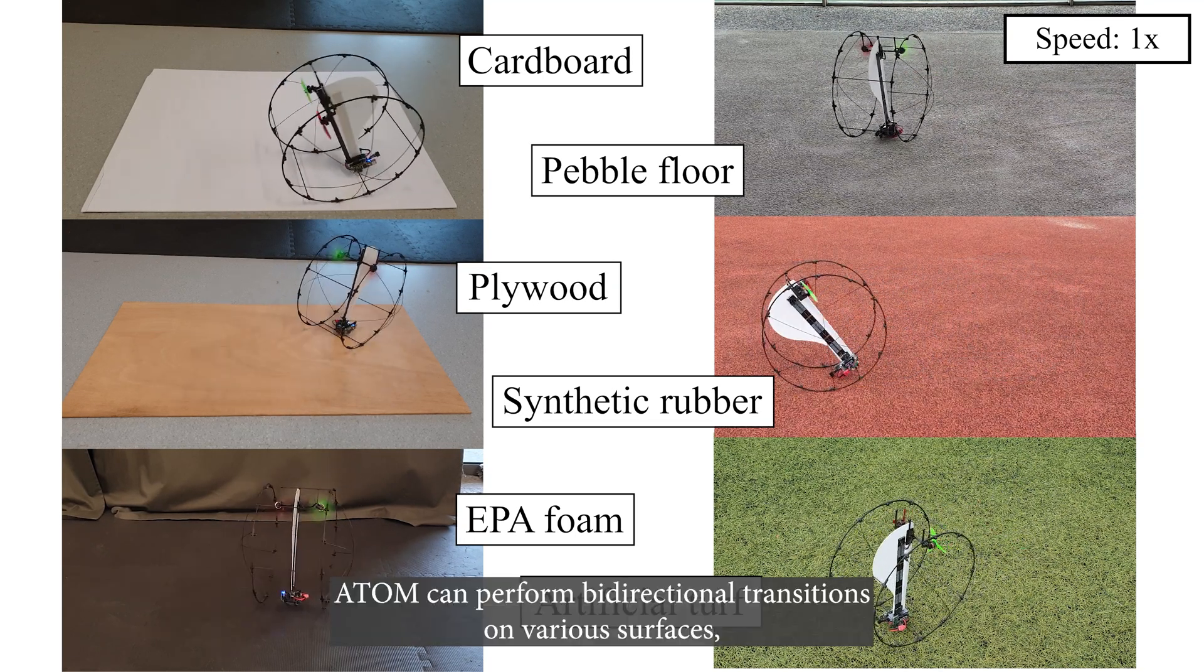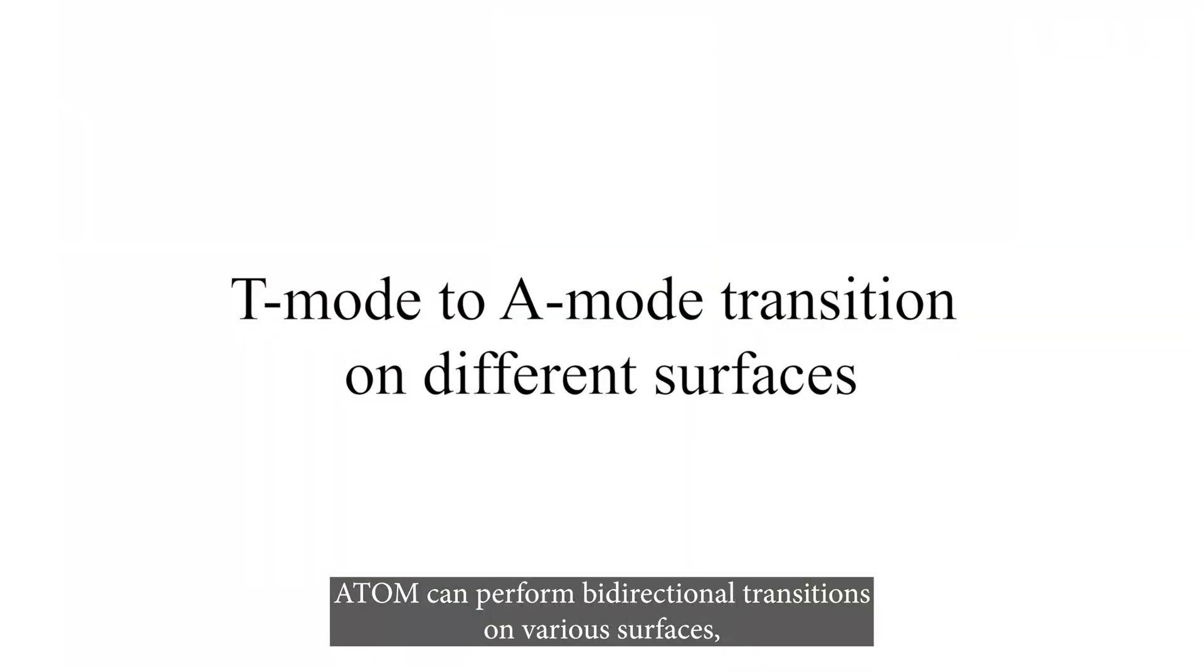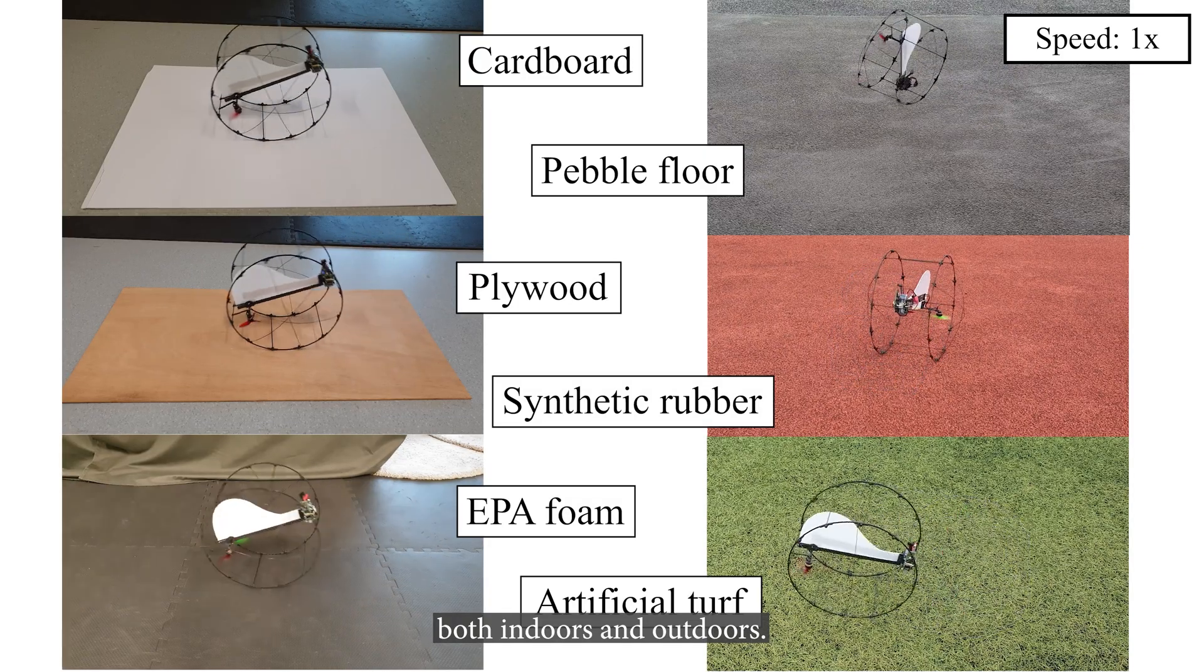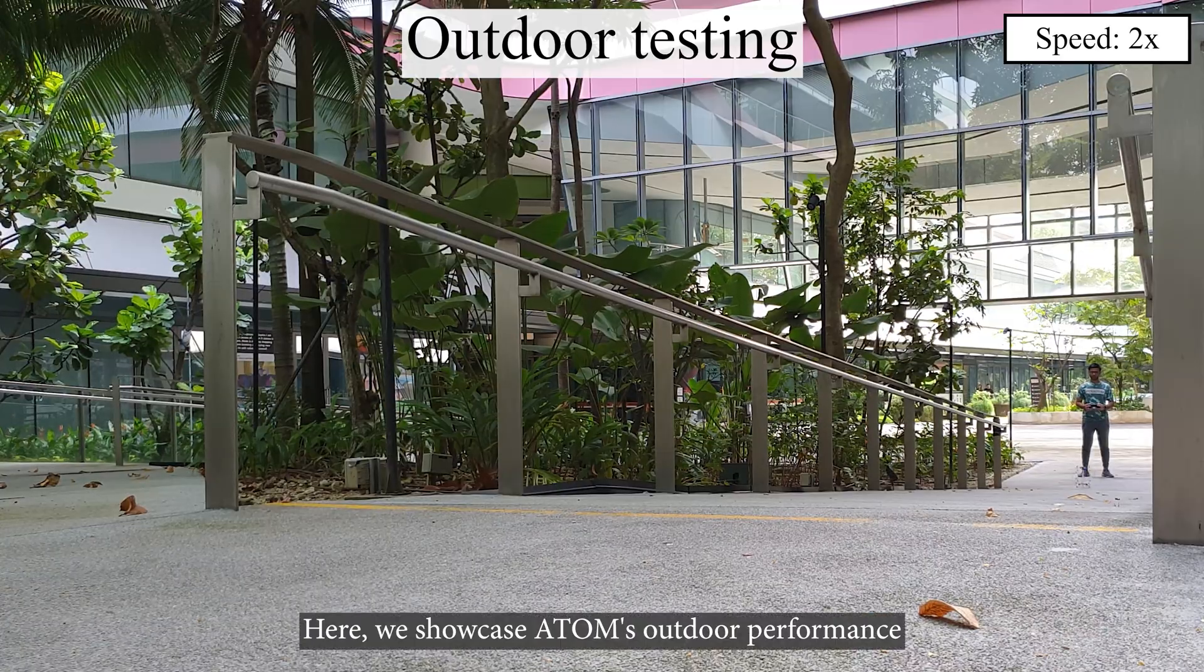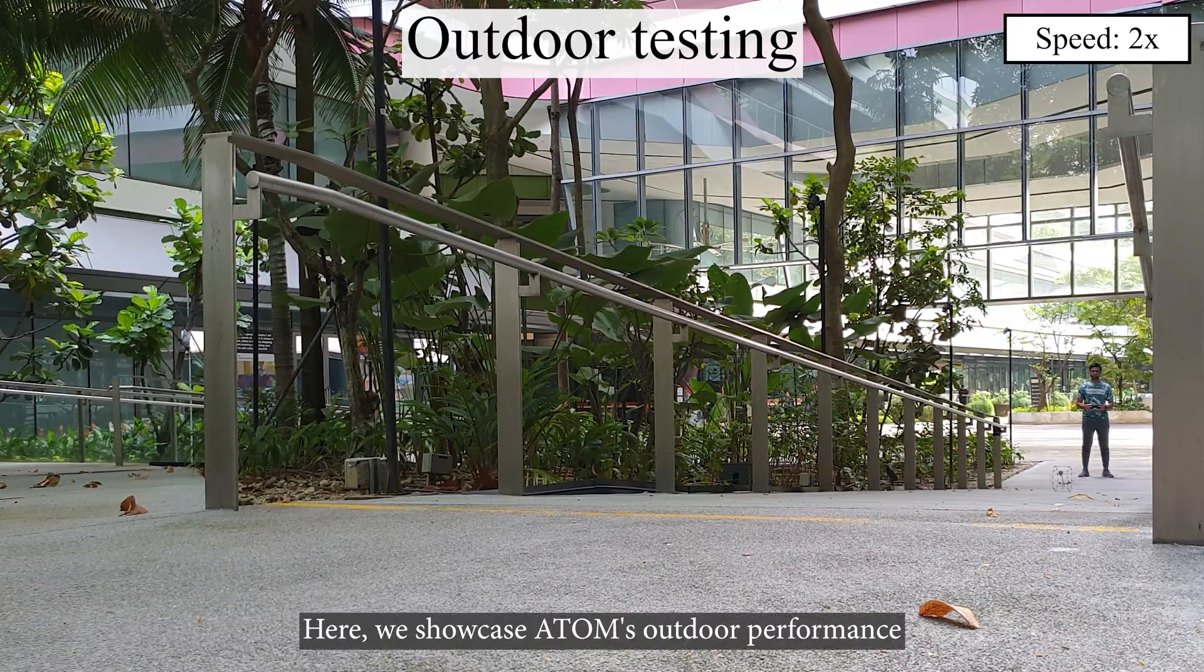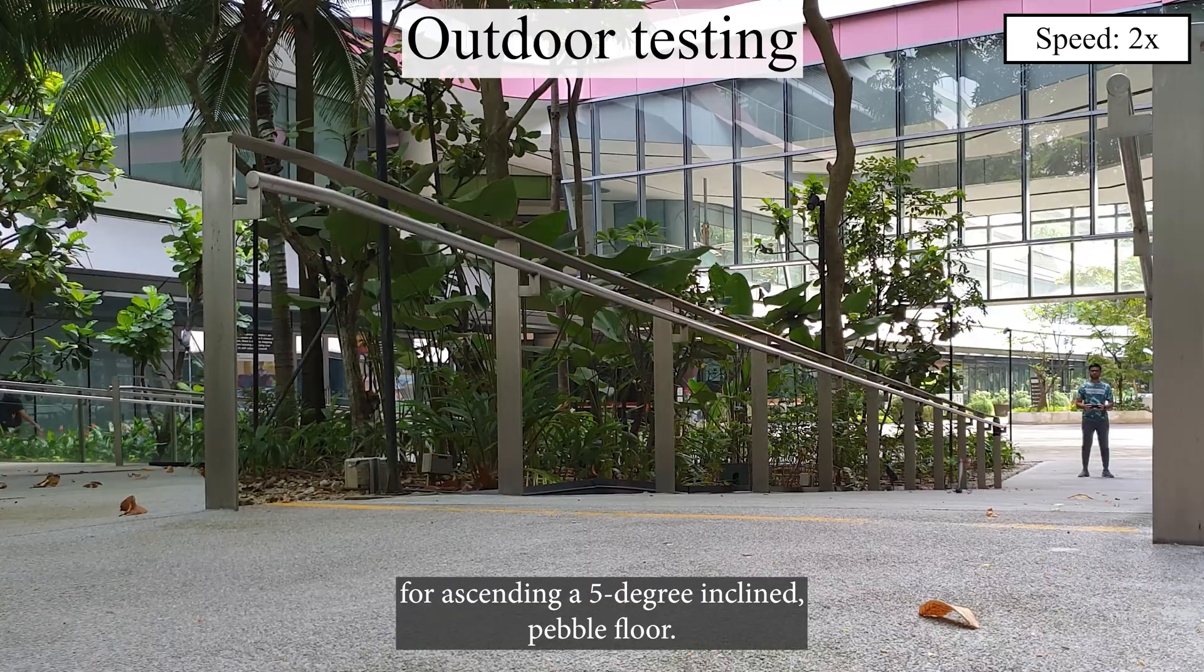Adam can perform bi-directional transitions on various surfaces, both indoors and outdoors. Here, we showcase Adam's outdoor performance for ascending a 5-degree inclined pebble floor.